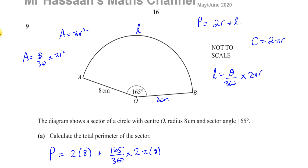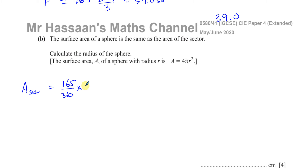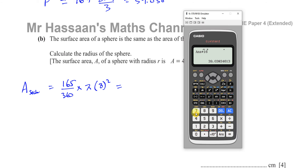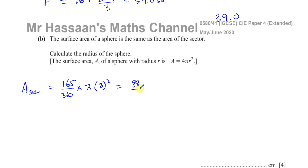We want the fraction 165 over 360 times π times 8 squared, where 8 is the radius of the sector. It's best to leave this in terms of π. Calculating gives us 88π over 3 as the area of the sector. Leave the π separate for cleaner algebra later.